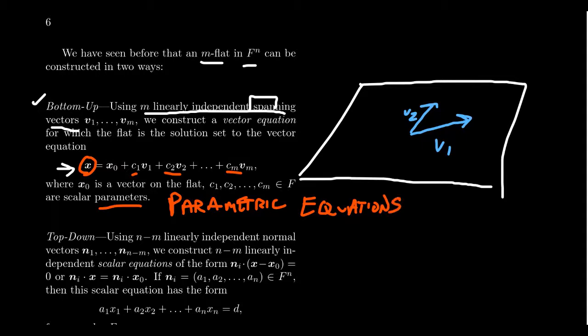That's the bottom-up approach — we just keep adding. If we want a 12-dimensional flat, what we do is add one spanning vector, then a second one, then a third one, then a fourth one, fifth one, all the way up to 12, each time making sure we add something that's linearly independent to what we had before.